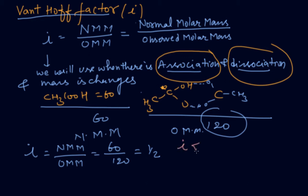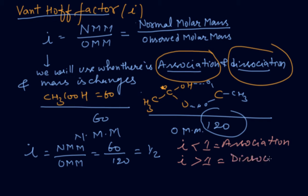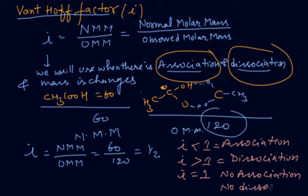When the value of i is less than one, association takes place. When i is greater than one, dissociation takes place. When i equals one, no association and no dissociation takes place. So i plays an important role in finding the colligative property.